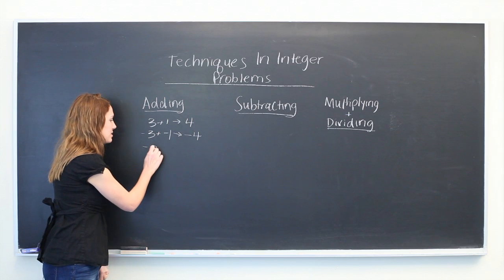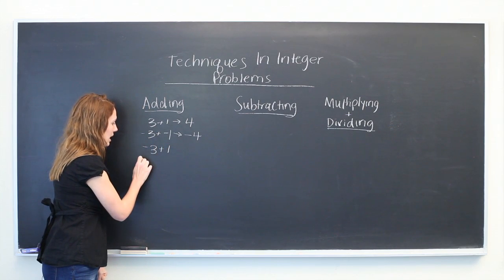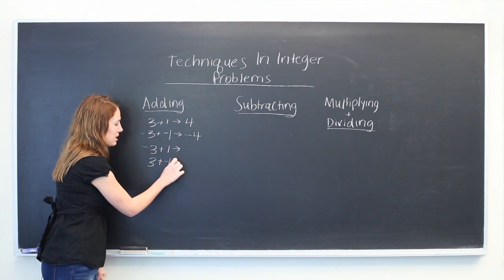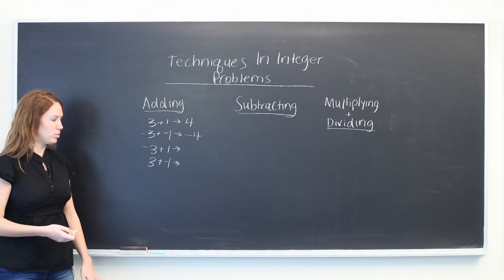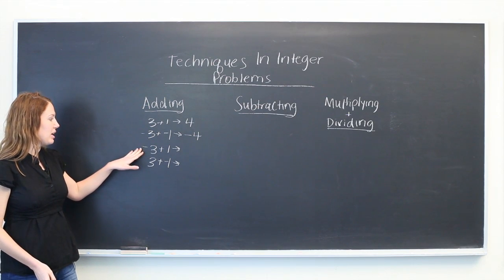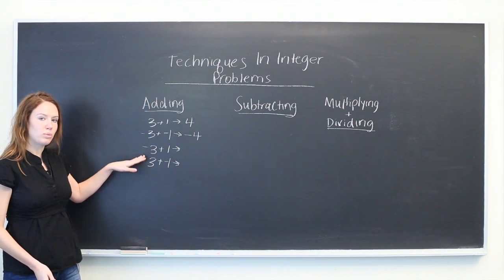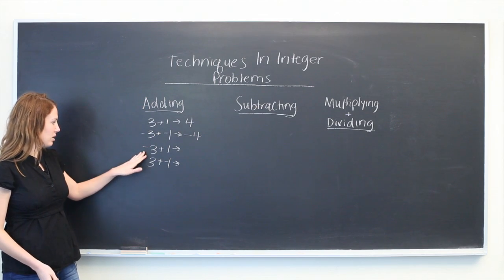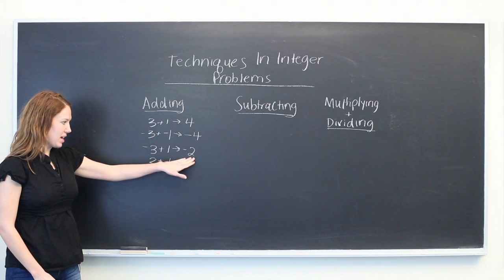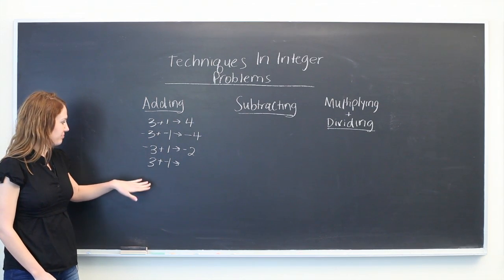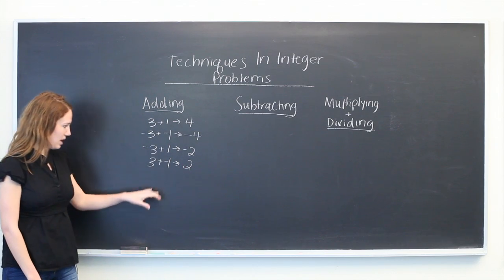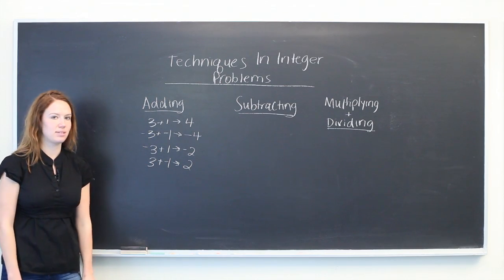Now if one of these is positive and the other one is negative, the problems can be a bit more tricky, but you just have to realize that you have to keep track of the signs and the sign of the greater value will be the sign of your answer. So minus 3 plus 1 is minus 2. The sign of the answer is the sign of the greatest integer. 3 plus minus 1 is positive 2. Again, positive 3 is the greatest, so our answer is positive.